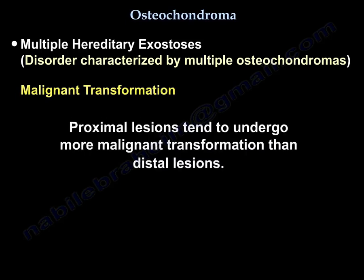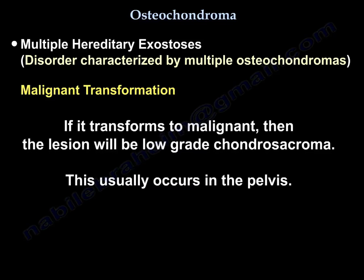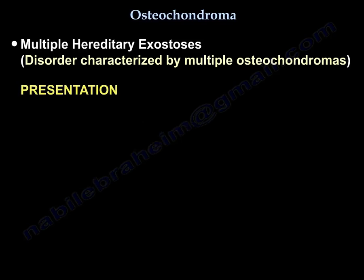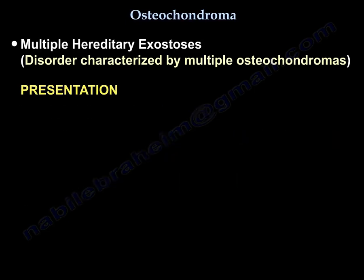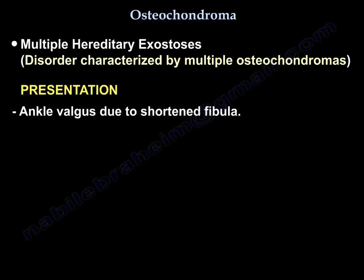Proximal lesions tend to undergo more malignant transformation than distal lesions. If transformation occurs, the lesion becomes low-grade chondrosarcoma, usually of the pelvis. Presentation of MHE includes short stature and skeletal deformities. Common sites of limb deformity are the knee, forearm, and ankle. Findings include coxa valga, knee valgus with short fibula and patellar dislocation, and ankle valgus due to short fibula.